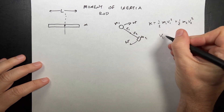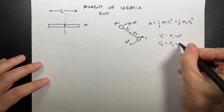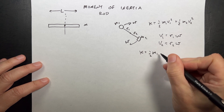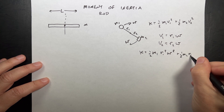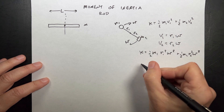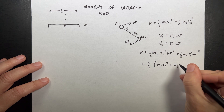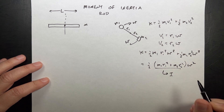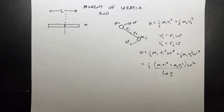If that's true, then I can write V1 as R1·ω and V2 as R2·ω — that's just the scalar version. Substituting in, I get K = one-half M1 R1² ω² plus one-half M2 R2² ω². Both terms have one-half ω², so I can factor that out and get one-half times (M1 R1² + M2 R2²) times ω². We call this term the moment of inertia I — it's the sum of M·R² for each mass.